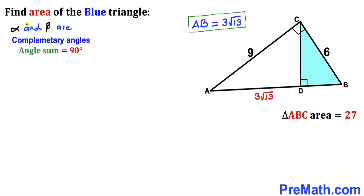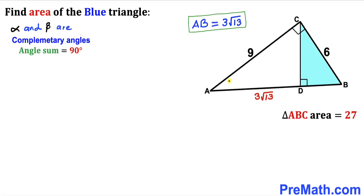Here's our next step. Let's assume that alpha and beta are complementary angles — in other words, angle alpha plus angle beta must equal 90 degrees. Therefore if I label this angle as alpha, and this is our 90-degree angle, then this remaining angle has got to be beta.